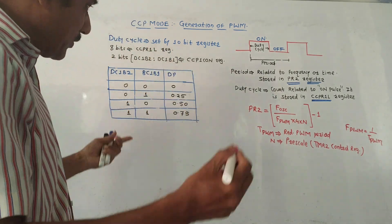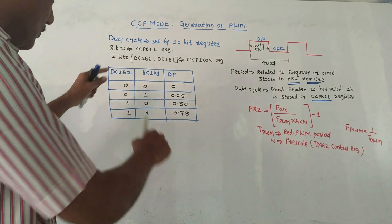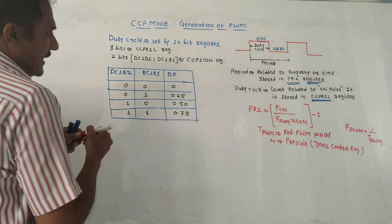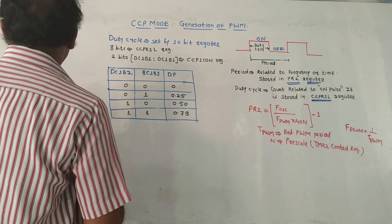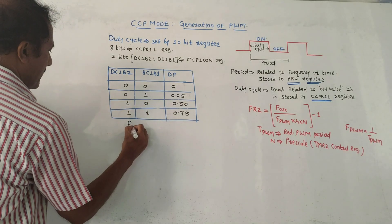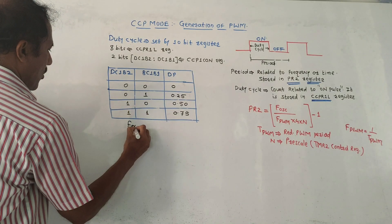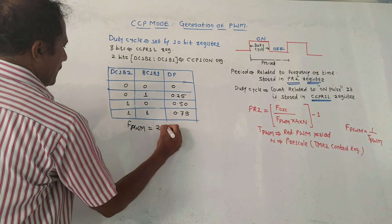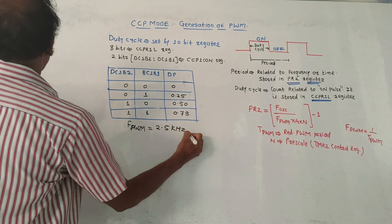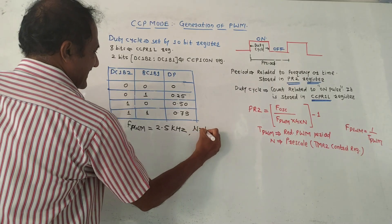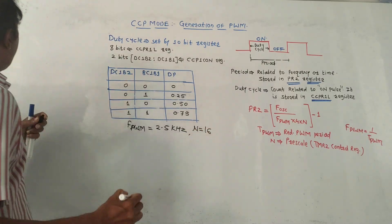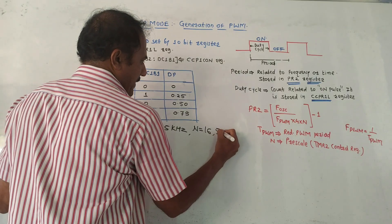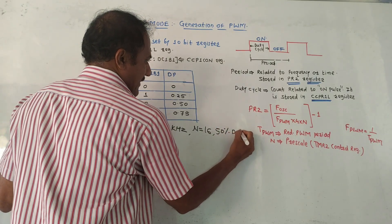Let us perform one calculation to make this concept clearer. Suppose the given frequency of the PWM waveform, f_PWM, is 2.5 kHz, the pre-scale value N is 16, and we want 50% duty cycle.